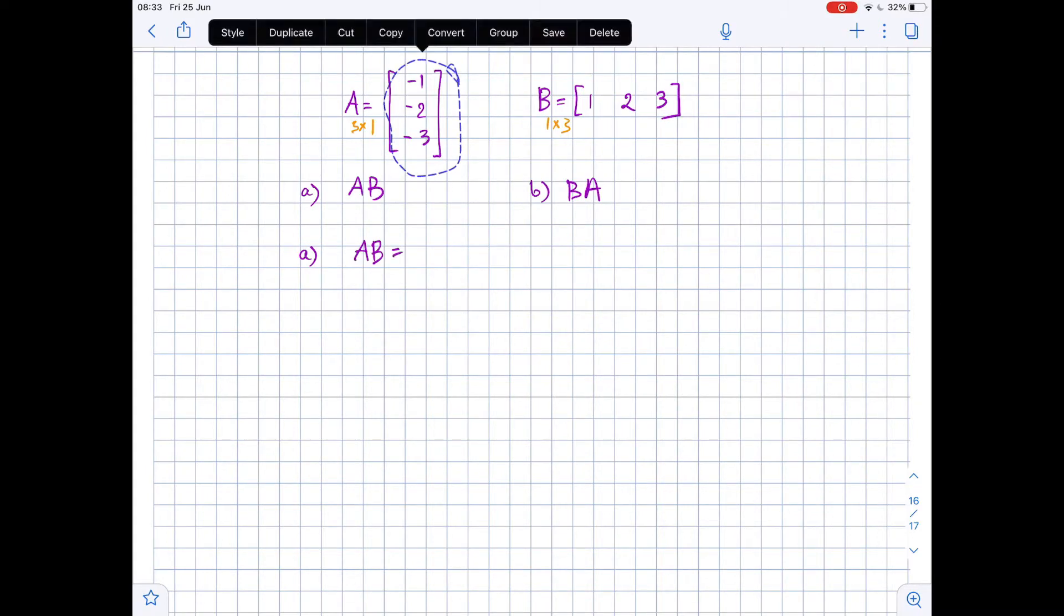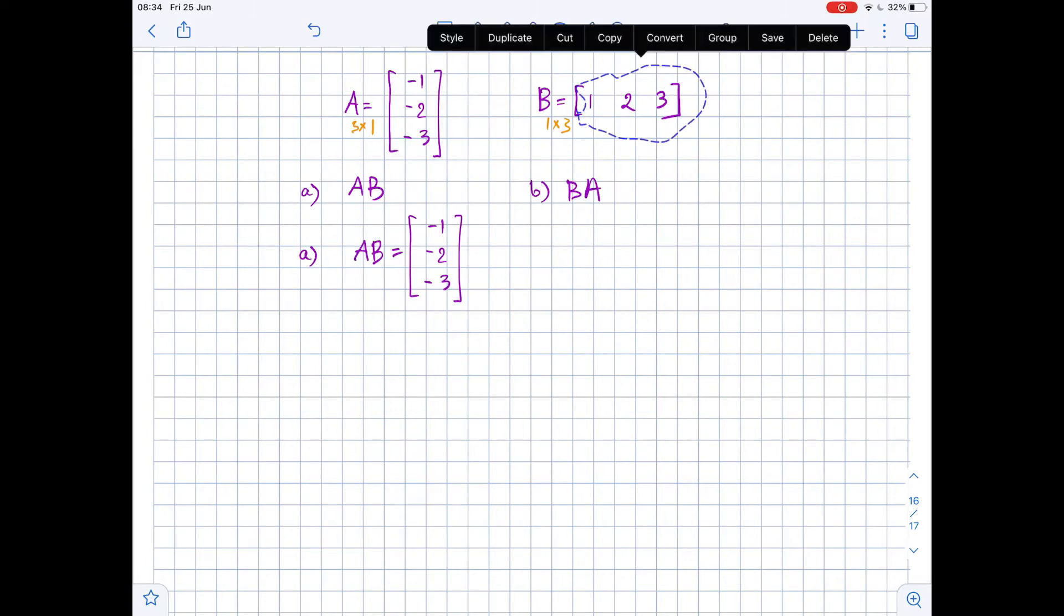AB equals matrix A times matrix B. So we need to find dot product of the rows of matrix A and columns of matrix B.